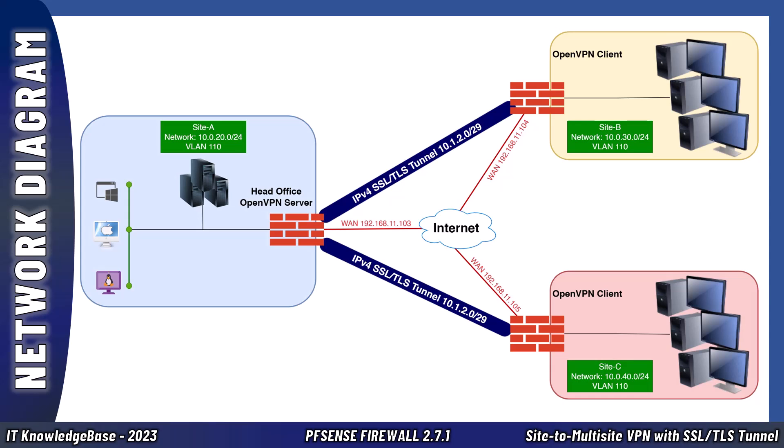Let's understand the typical PFSense firewall network. We have three sites. Site A is our head office on the left, Site B is on the top right, and Site C is on the bottom right. I have already established a site-to-site VPN over OpenVPN SSL/TLS tunnel mode and it's working fine, but Site C is still not connected with the head office. I have already completed all the networking and just need to generate the required certificates for Site C, then export and copy them to the Site C PFSense firewall along with the certificate authority. Then we'll verify VPN tunnels from both sites and configure inter-branch communication.